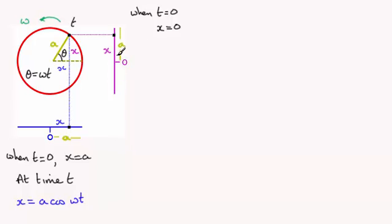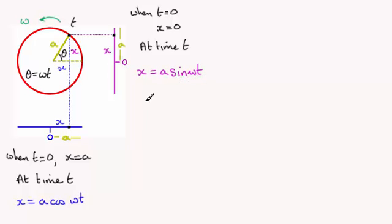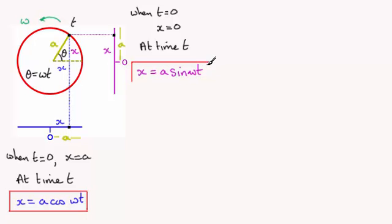For the vertical projection, when t equals 0 the particle is at the centre of oscillation, so x equals 0. Here x appears in the triangle as x equals a sine theta, and since theta equals omega t, we get x equals a sin(ωt). So depending on where the particle starts at time t equals 0: if it starts at maximum amplitude, x equals a cos(ωt); if it starts oscillating from the centre, x equals a sin(ωt).